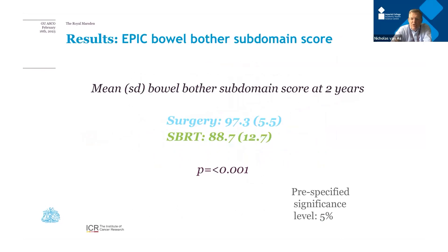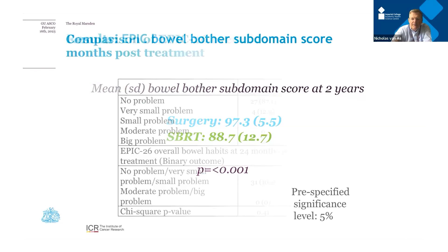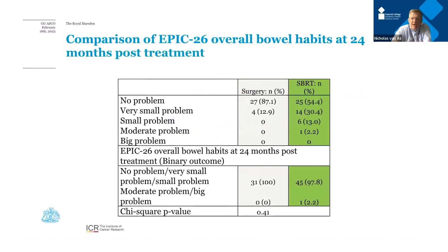For the co-primary endpoint of bowel bother, using the EPIC score where 100 is best and scores around 50 indicate significant bother: bowel bother was slightly better for surgery than radiotherapy, and the difference was statistically significant, but symptoms were very minor in both arms. Looking in more detail, most patients who had SBRT described only small bother — just one patient reported a moderate problem and no one reported a big problem.